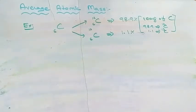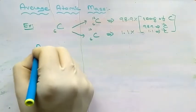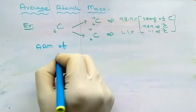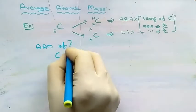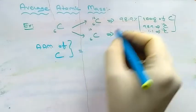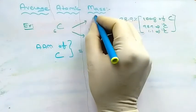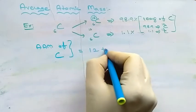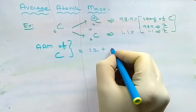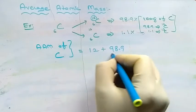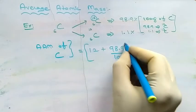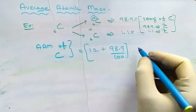We use the same formula and substitute the values. The mass of the first isotope, which is 12, is multiplied by 98.9 divided by 100, because we are converting percentage into a number.